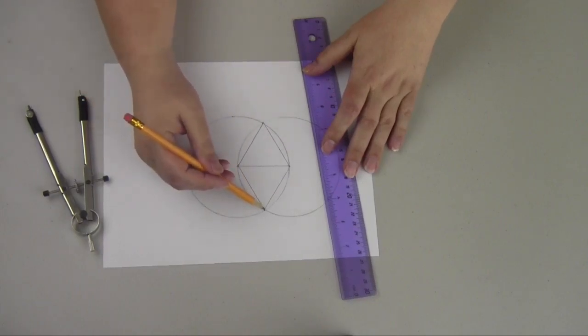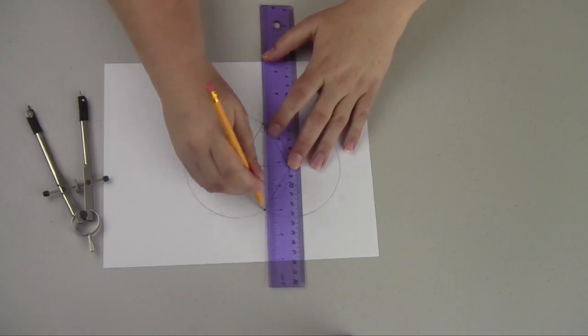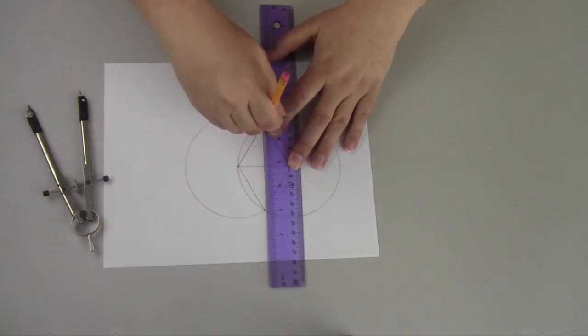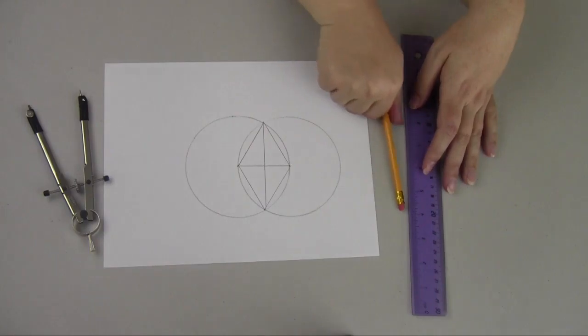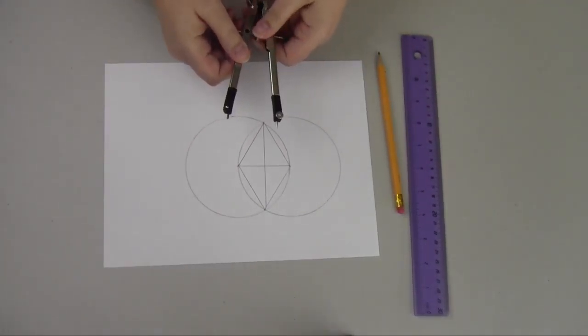Now I'm going to connect the top point to the bottom point, creating a new central point. With that central point, I am going to take my compass and create a new circle.